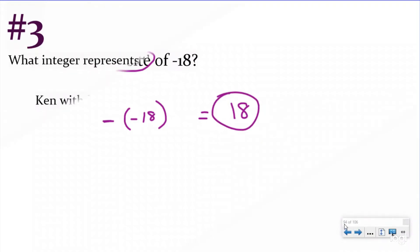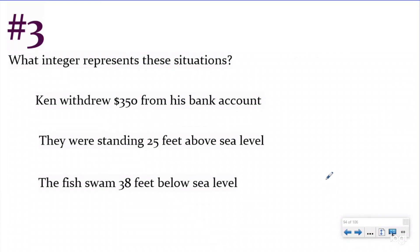Let's go on to number three. Number three says, what integer represents these situations? So here are some real world situations. We're going to be looking for keywords to help us understand what's happening. Ken withdrew $350 from his bank account. That means he went backwards 350. So that is going to be negative 350.